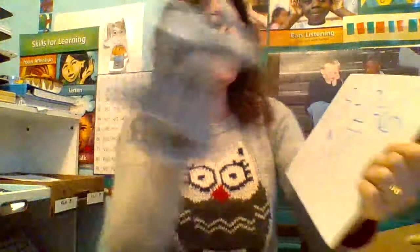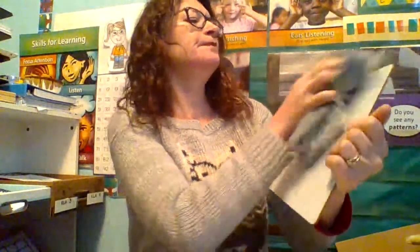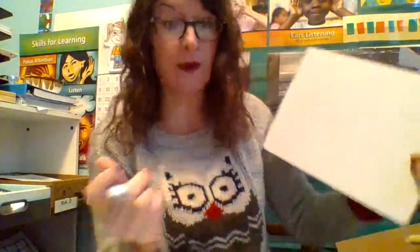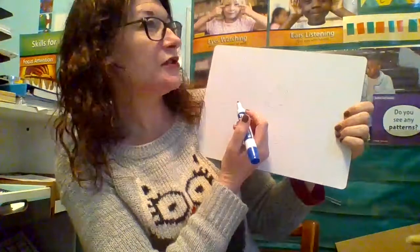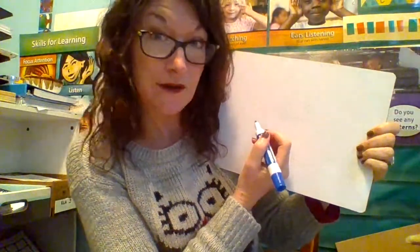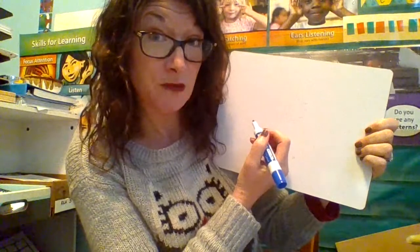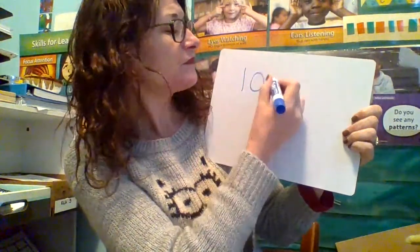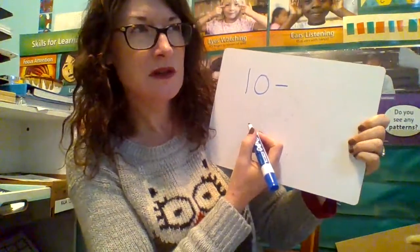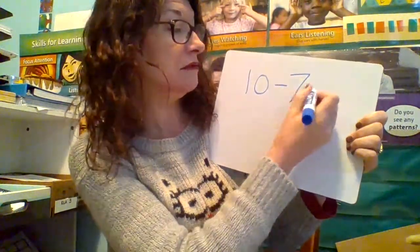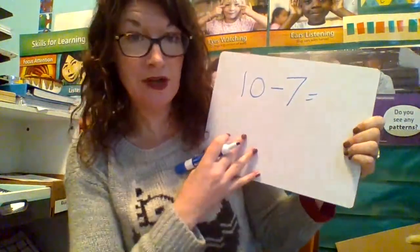Okay, let's try one more, and then you're going to try a few on your own. Let's try a really tricky one — you seem like you might be ready. How about 10 minus 7? Getting bigger numbers here. Now, which number am I going to start on with the counting on strategy? That's right — I'm going to start with my 7.